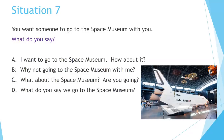Situation 7. You want someone to go to the space museum with you. What do you say? A. I want to go to the space museum. How about it? B. Why not going to the space museum with me? C. What about the space museum? Are you going? D. What do you say we go to the space museum?